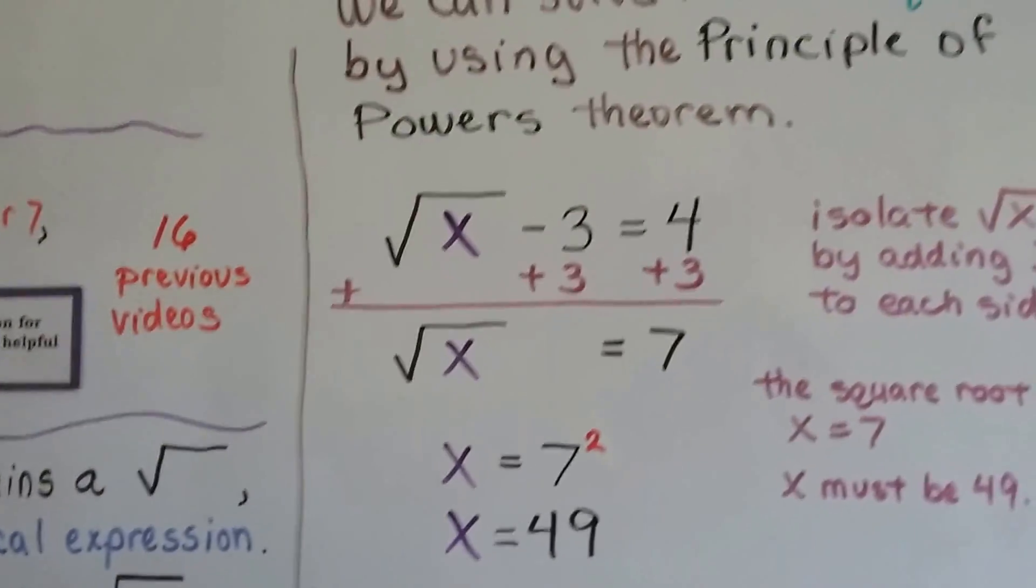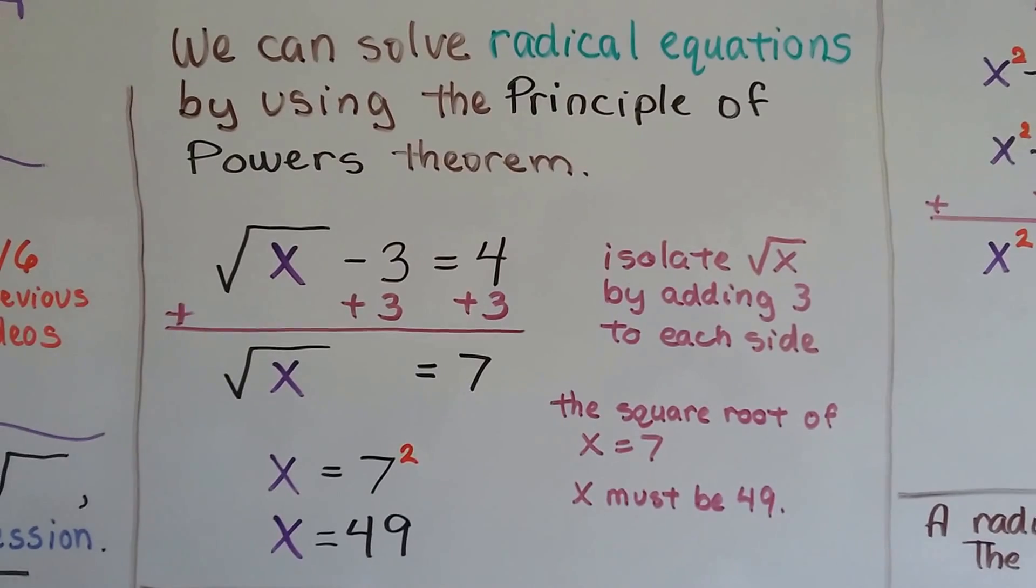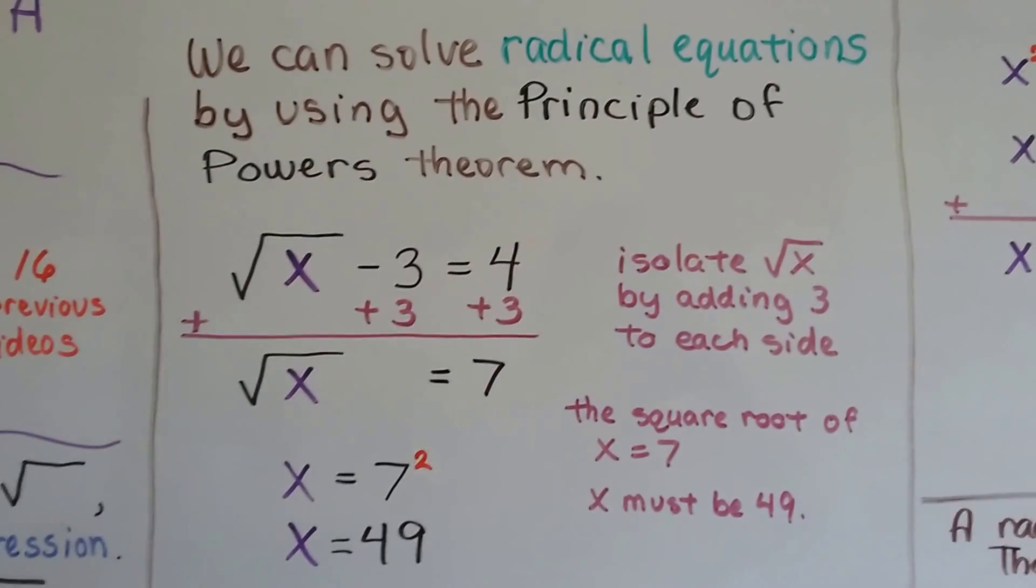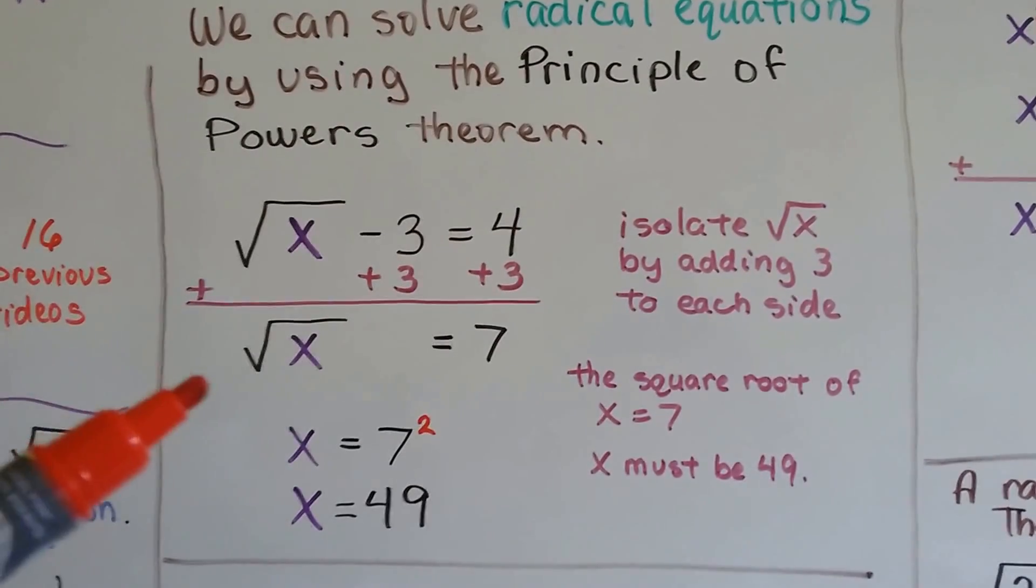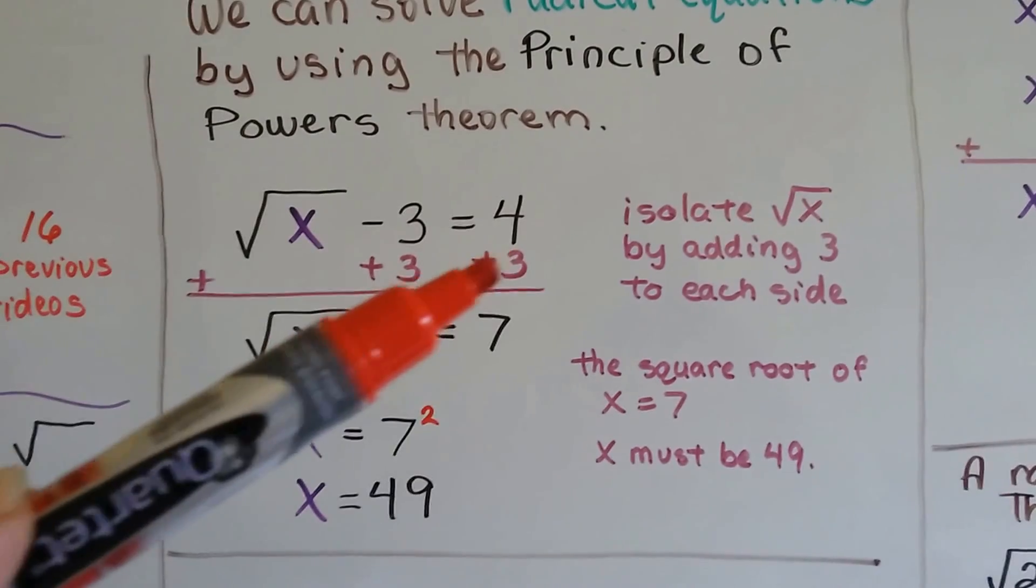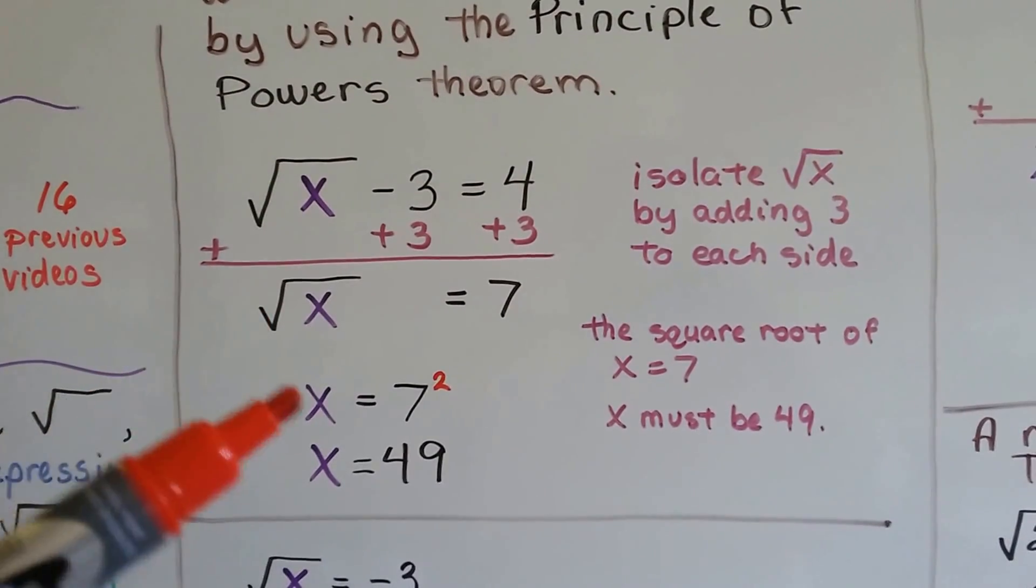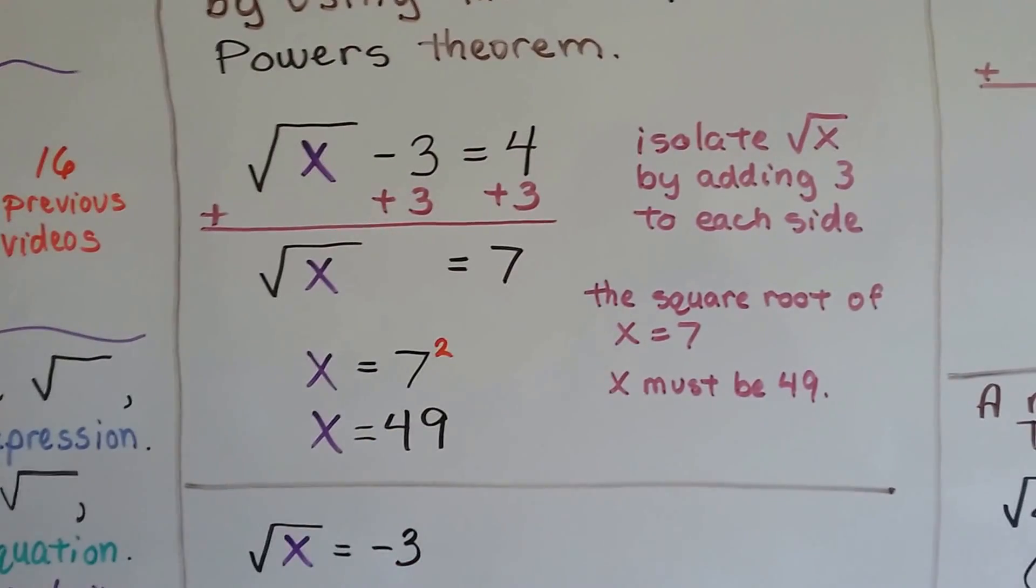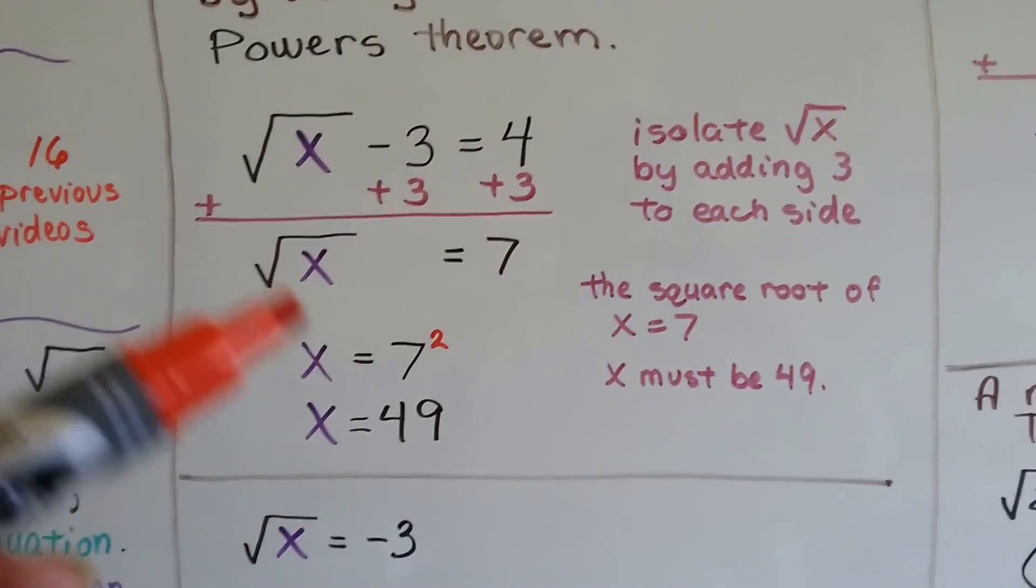My board is pretty full today. It's pretty jam packed, so look at this. I hope you're going to be able to follow me on this. We can solve radical equations by using the principle of powers theorem. So if we have the square root of x minus 3 equals 4, we can isolate that square root of x by adding 3 to each side of the equation. By adding a 3 to each side, we're going to end up with the square root of x equals 7. And we know that we can take that radical sign off and put a second power over this 7, which means x is going to equal 49. The square root of x equals 7. So what is 7? It's 7 times 7, that's 49.